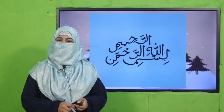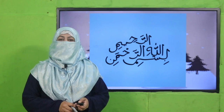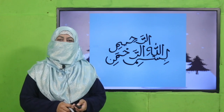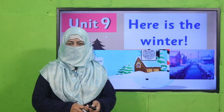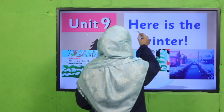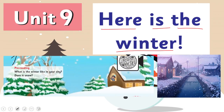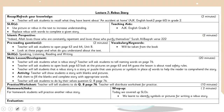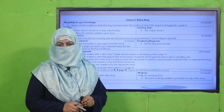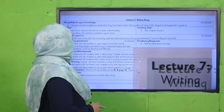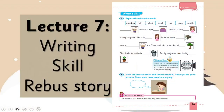Bismillahirrahmanirrahim. Assalamu alaikum, my dear students, how are you? I hope you are enjoying the best of health. I welcome you in my class — English for Grade 2. We are learning Unit 9, its title is 'Here is Through Winter.' My dear fellow teachers, this lesson plan, PowerPoint presentation, and worksheet links are given; you may click, download, and follow it as is or modify it.